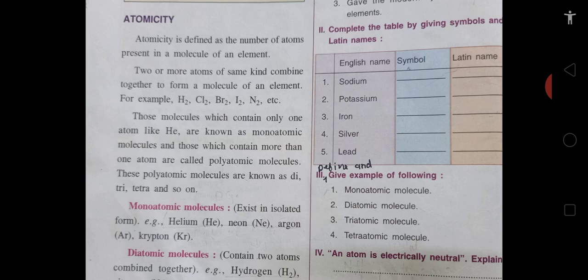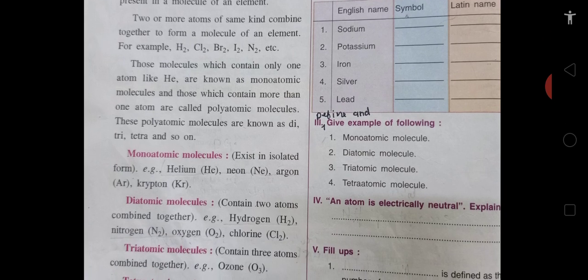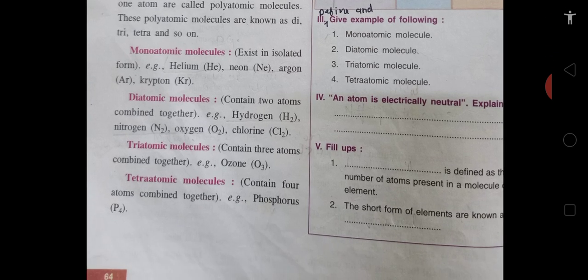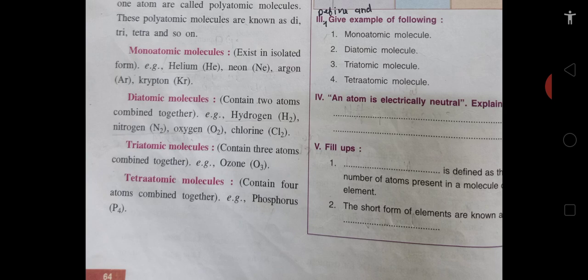Polyatomic molecules are known as diatomic, triatomic, tetraatomic and so on. Monoatomic molecules exist in isolated form — only one atom is present — like helium, neon, argon, and krypton. Diatomic molecules contain two atoms combined together, like hydrogen H2, nitrogen N2, oxygen O2, and chlorine Cl2. Triatomic molecules contain three atoms — for example ozone with formula O3. Tetraatomic molecules contain four atoms — for example phosphorus P4. If there are more than that, they are called polyatomic in different forms.